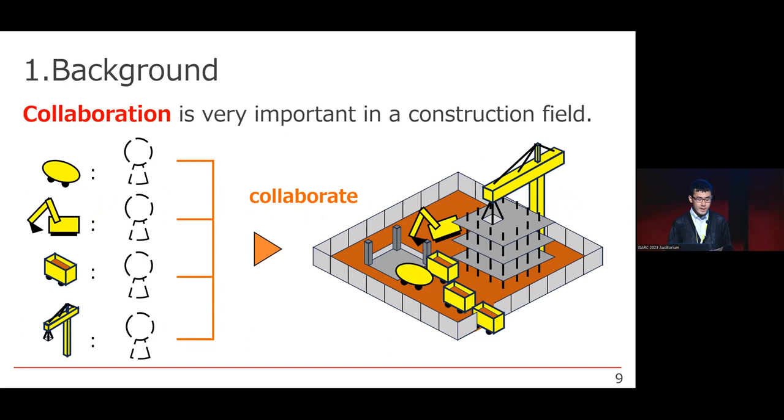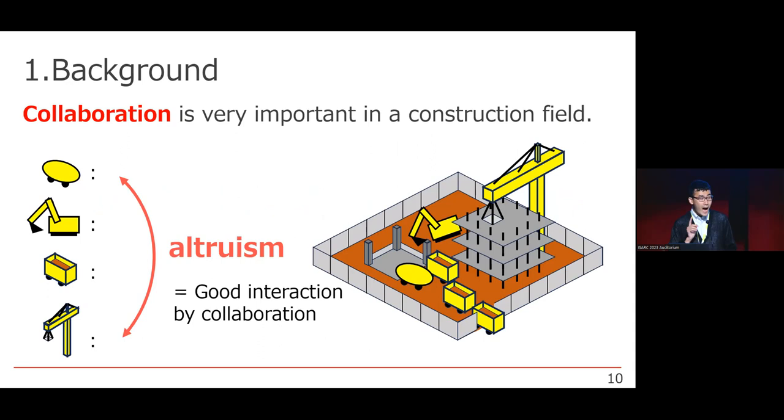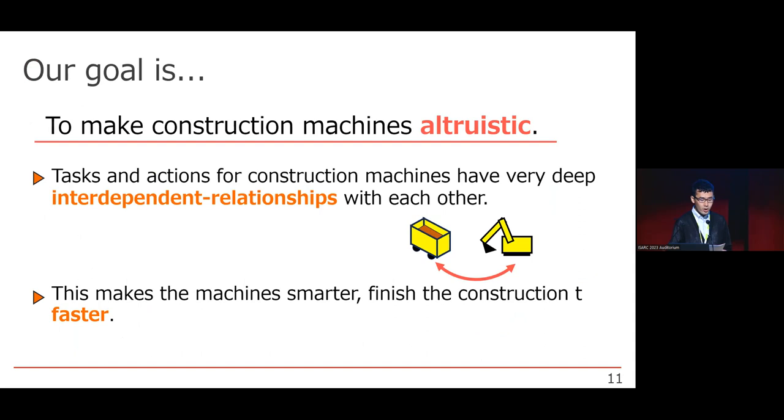The machines' actions have a very big interdependency with each other. We call this function altruism. Every action of construction machines has this altruism. It gives a good effect on the other's actions, and these altruisms make a collaboration effect.